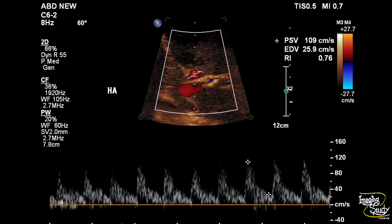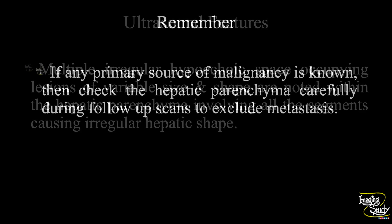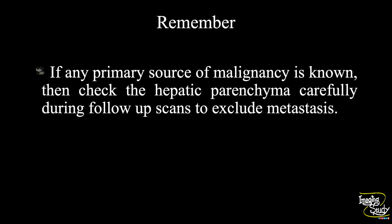So in summary, multiple irregular hypoechoic space-occupying lesions of different size and shape are noted within the hepatic parenchyma involving all segments, causing the hepatic shape to be irregular — indicating hepatic metastasis. The take-home message: if any primary source of malignancy is known, then check the hepatic parenchyma carefully during follow-up scans, if possible with high frequency, to exclude metastasis.